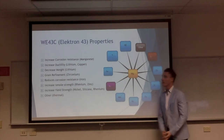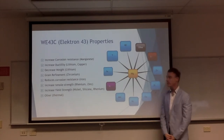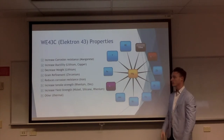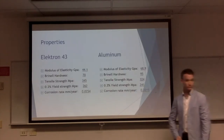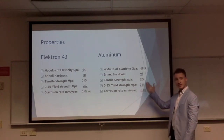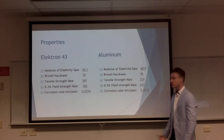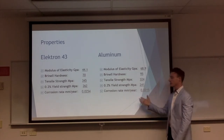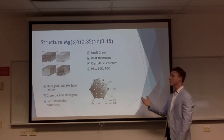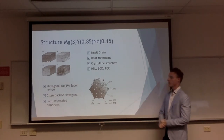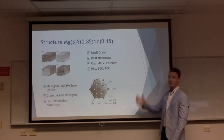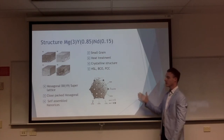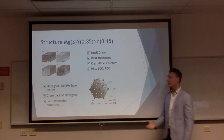As you can see from the properties here, Electron 43 is made up of 91% magnesium, and the following elements make up the remainder, bringing grain refinement and other desired characteristics. Listed here are the properties of Electron 43 next to aluminium, since aluminium is used in bicycles currently. As you can see, Electron 43 outperforms aluminium in tensile strength, yield strength, and has similar corrosion resistance. Here you can see the structure of Electron 43.